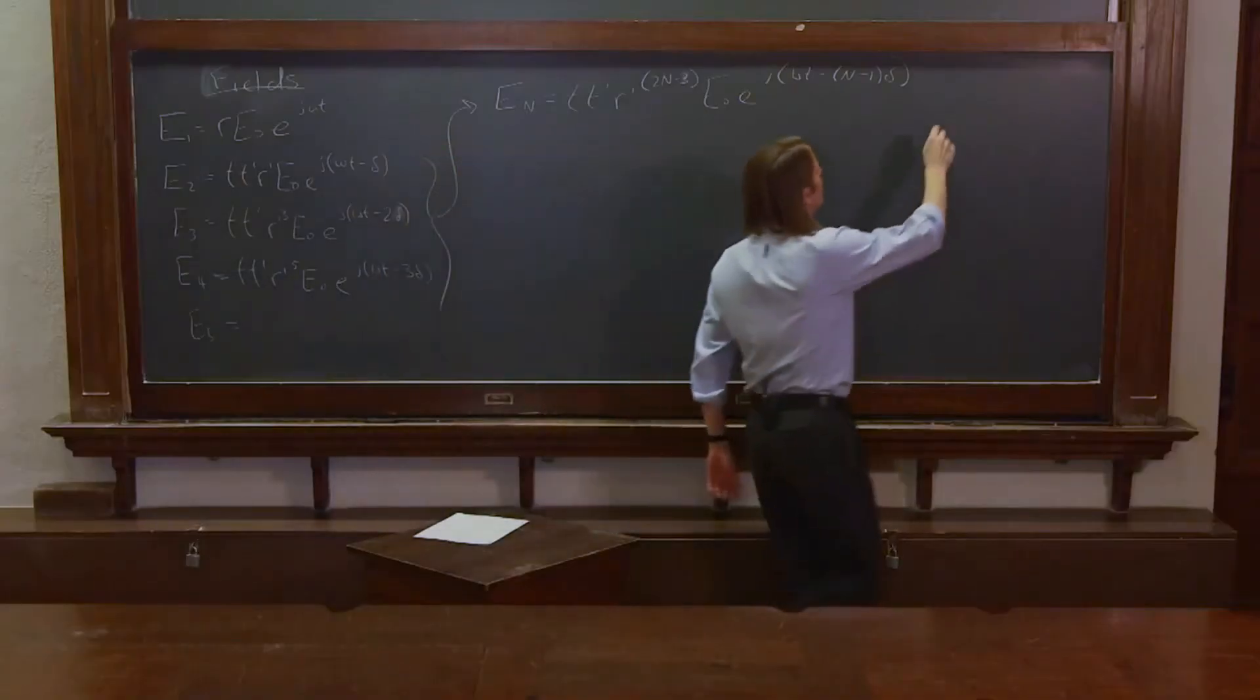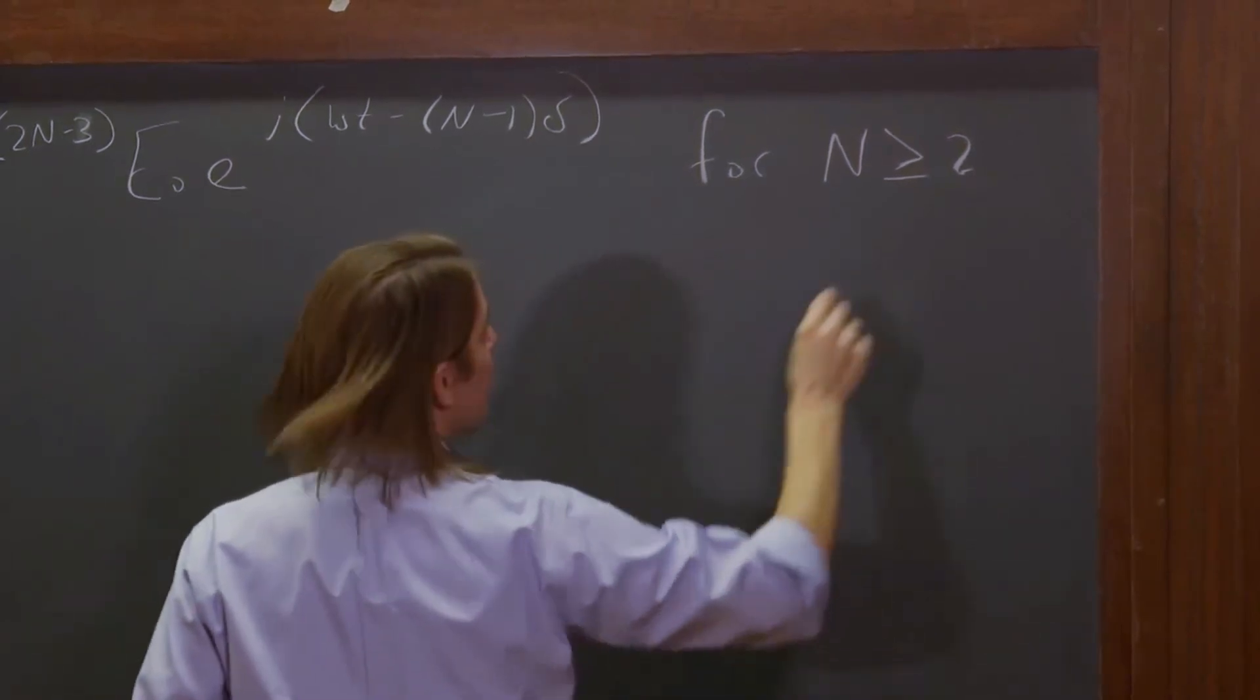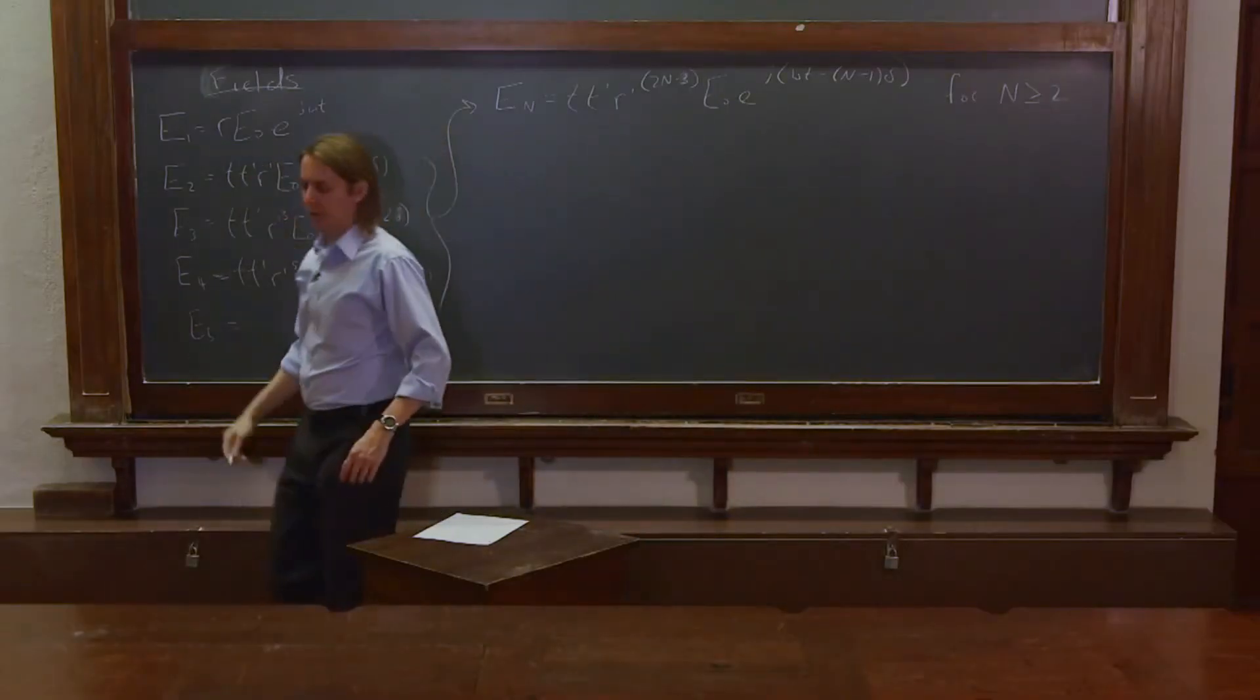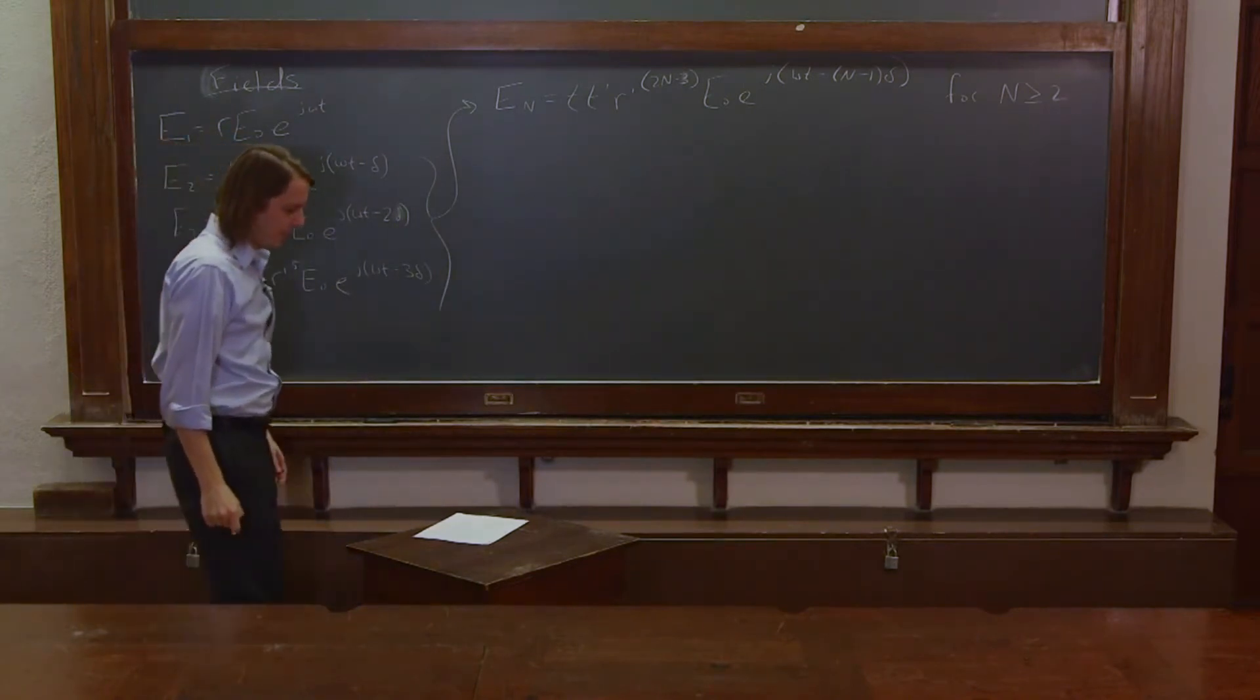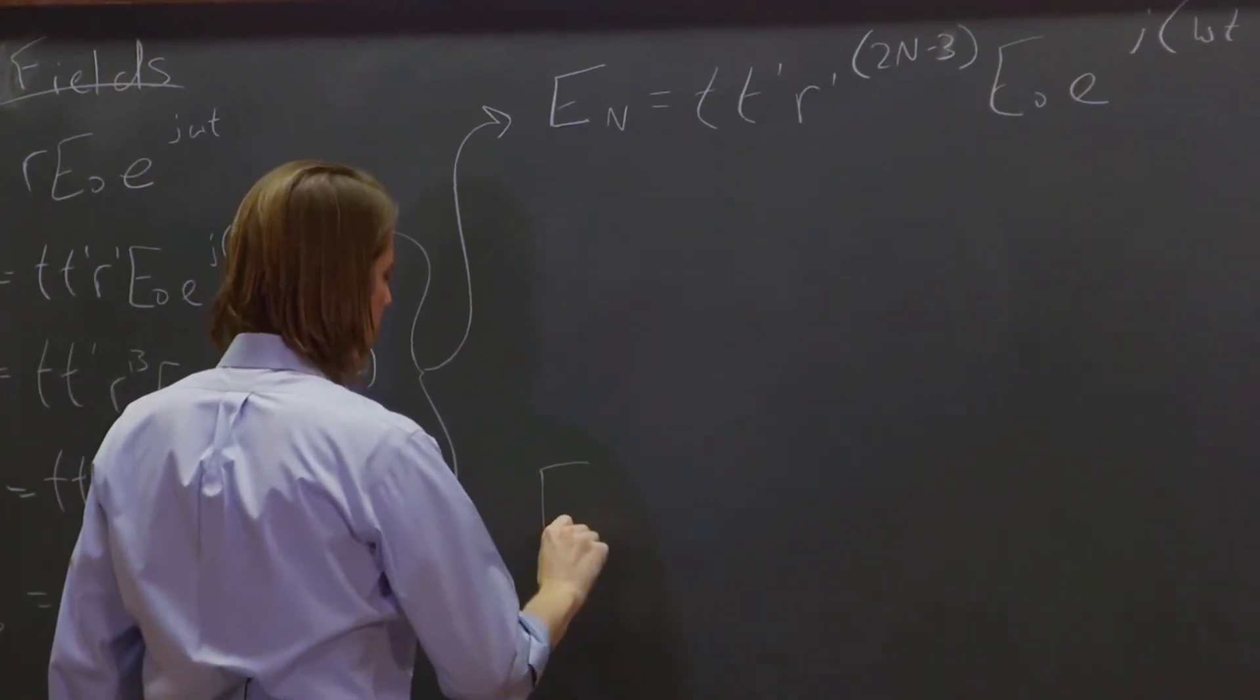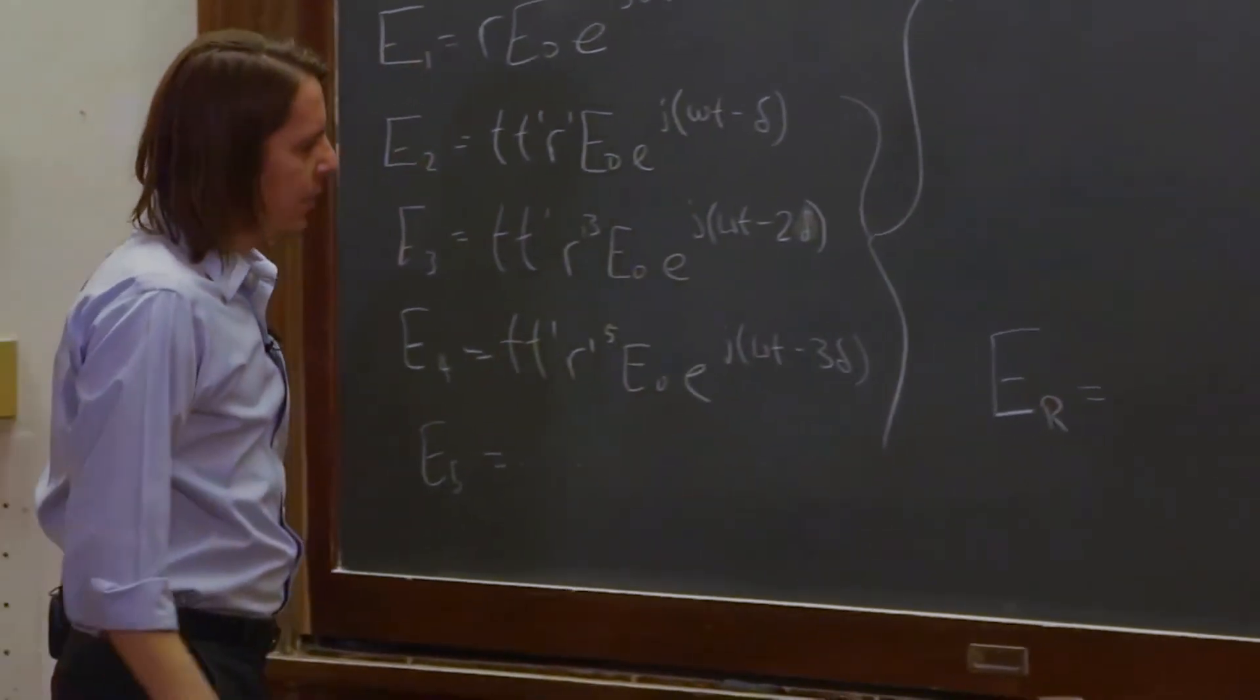And this is for n greater than or equal to two. So n equals one is something else. So that's all of our higher terms. So in that case, we can now write E, R, the reflected thing.